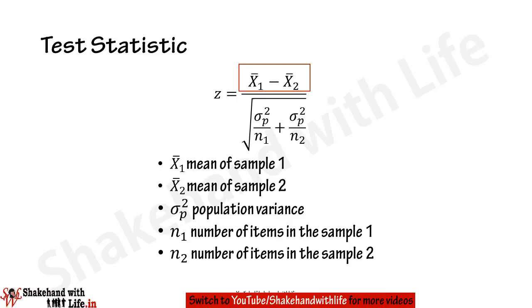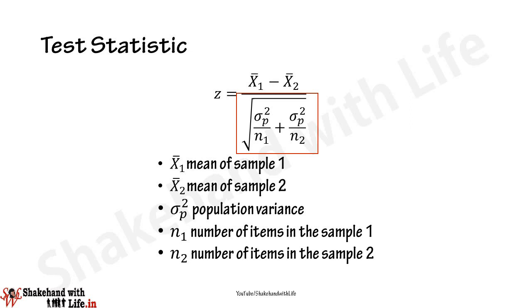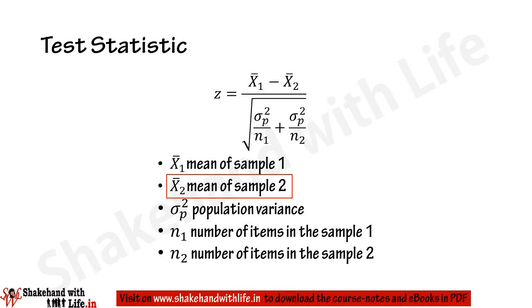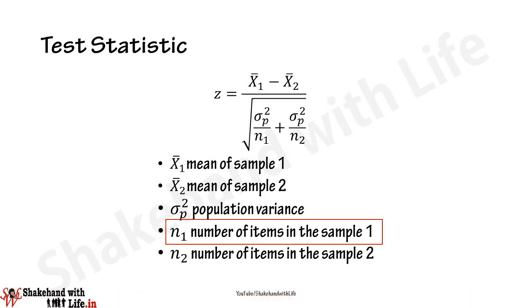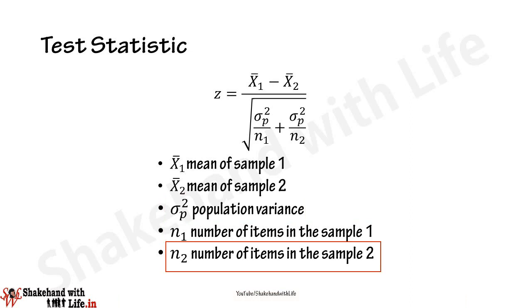Z = (x̄₁ − x̄₂) in the numerator, which is the difference of the sample means, and in the denominator the square root of (σ_p² / n₁ + σ_p² / n₂). Here x̄₁ is the mean of sample one, x̄₂ is the mean of sample two, σ_p² is the population variance, n₁ is the number of items in sample one, and n₂ is the number of items in sample two.